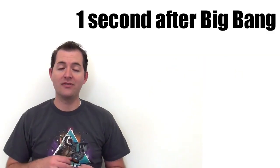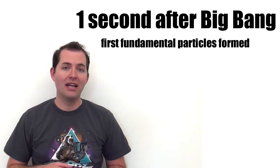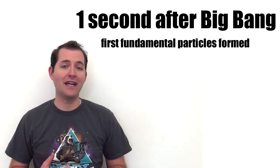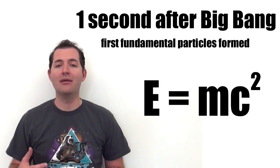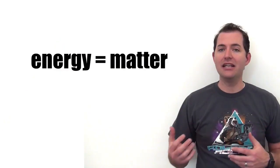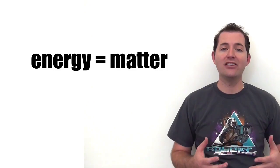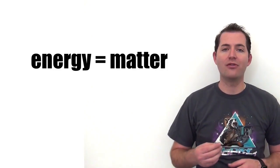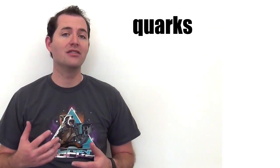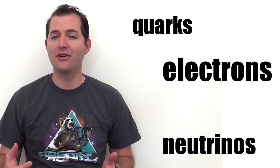Now at one second, the first fundamental particles began to form, and they did this according to Einstein's famous equation of E equals MC squared. Now energy and matter are equivalent in the universe, and as that energy became cool enough, it formed into matter. And these first fundamental particles were quarks, neutrinos, electrons, and photons.